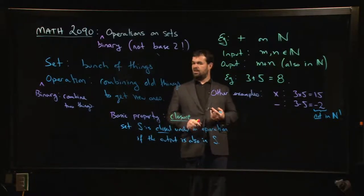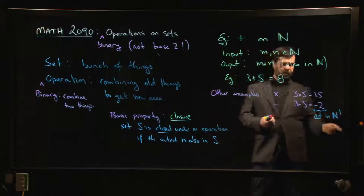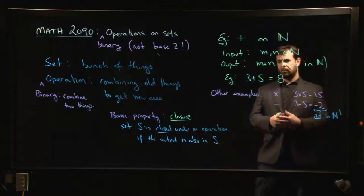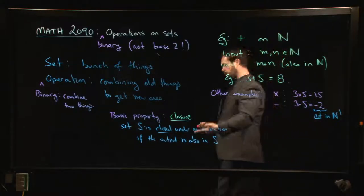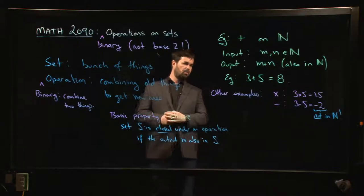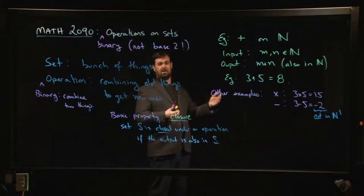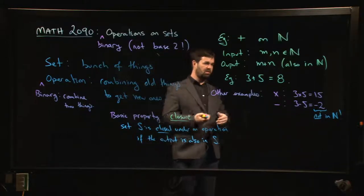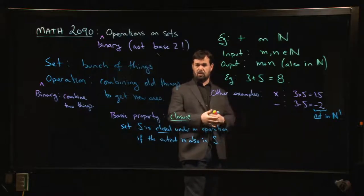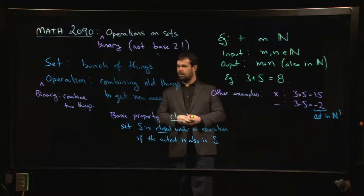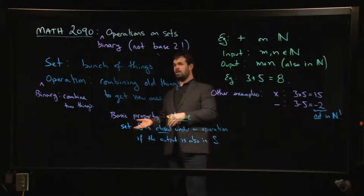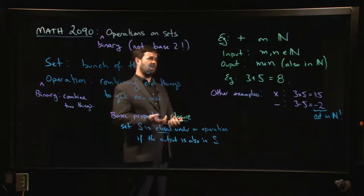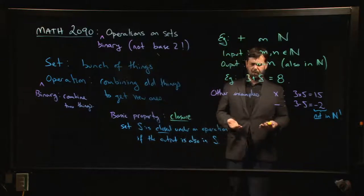At least with natural numbers and subtraction, we have a way of describing the result — we know what minus two is because the natural numbers sit inside a larger set, the integers. But if you're doing research in math and you invent some new way of combining objects from some set, you might find that sometimes the new thing doesn't belong to the same set. Then you might have to start inventing new sets and new types of objects to describe those outputs.